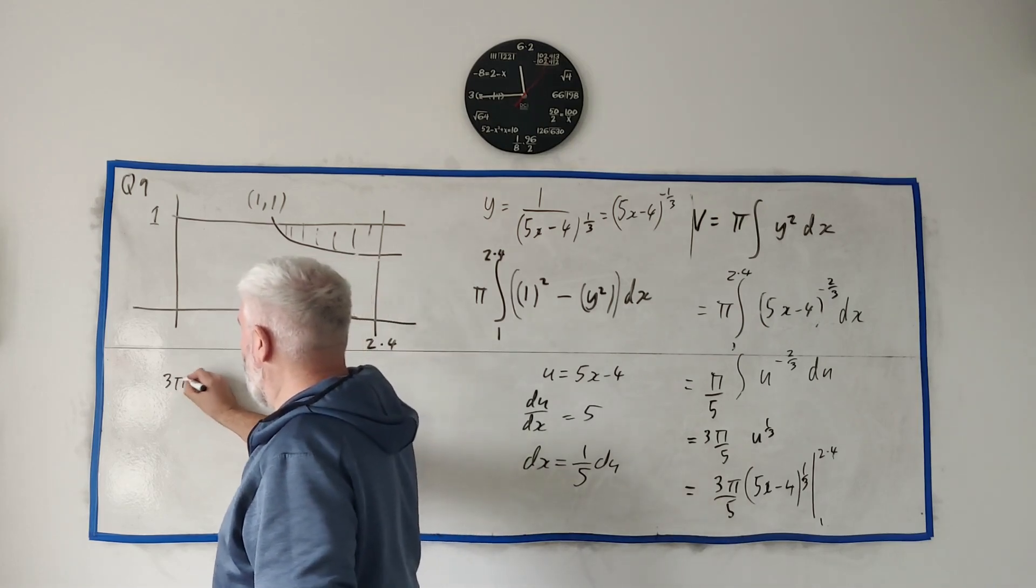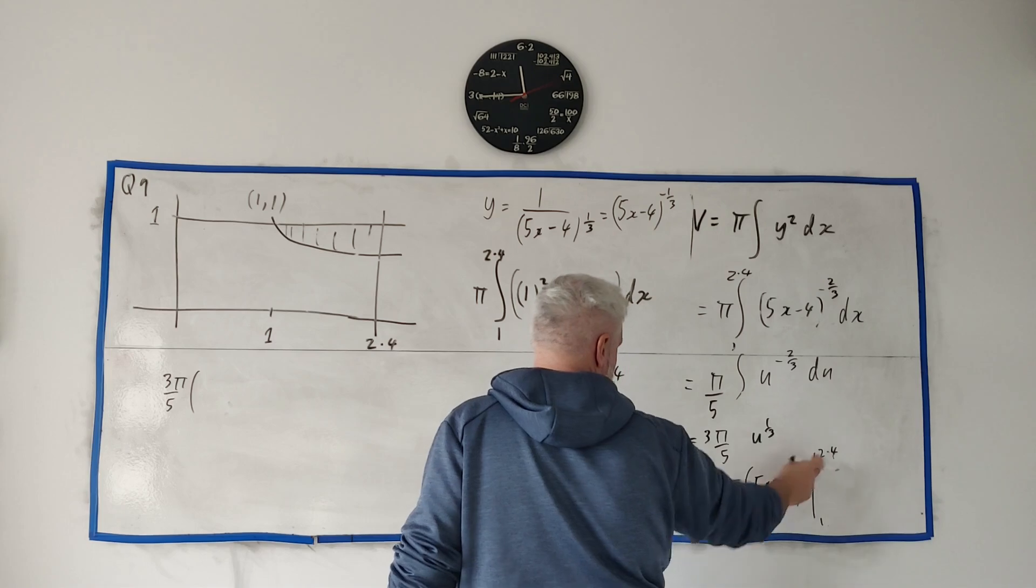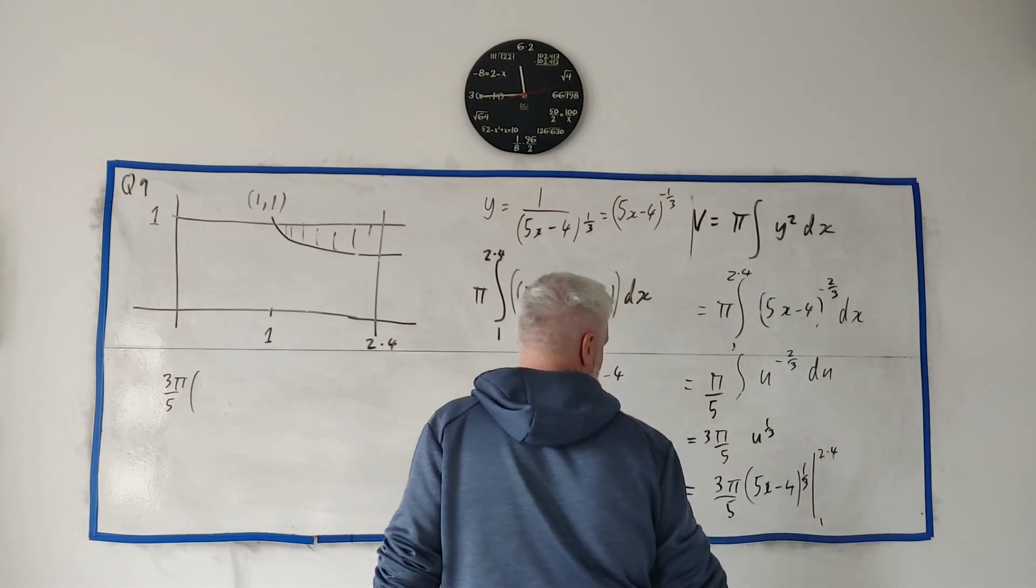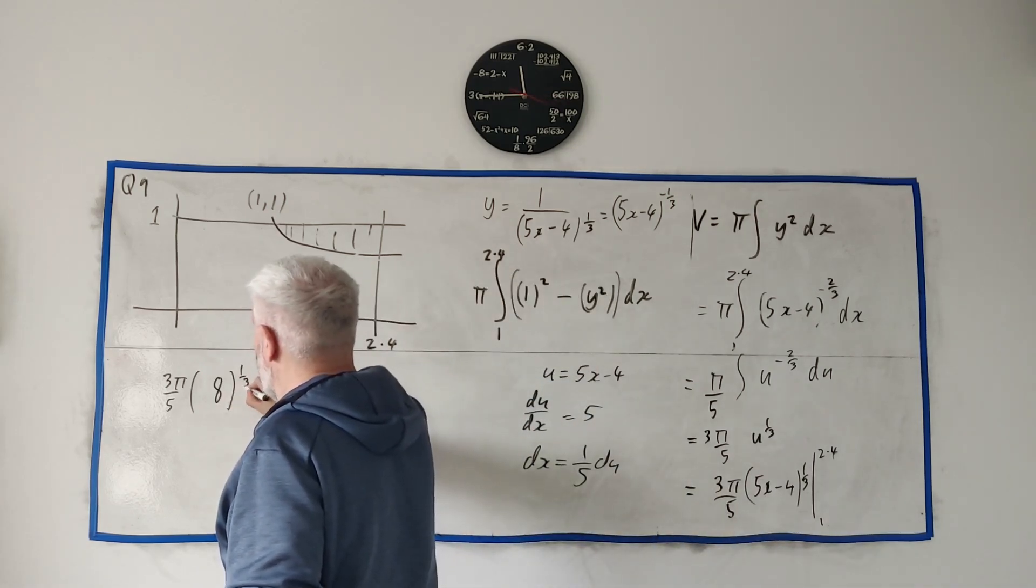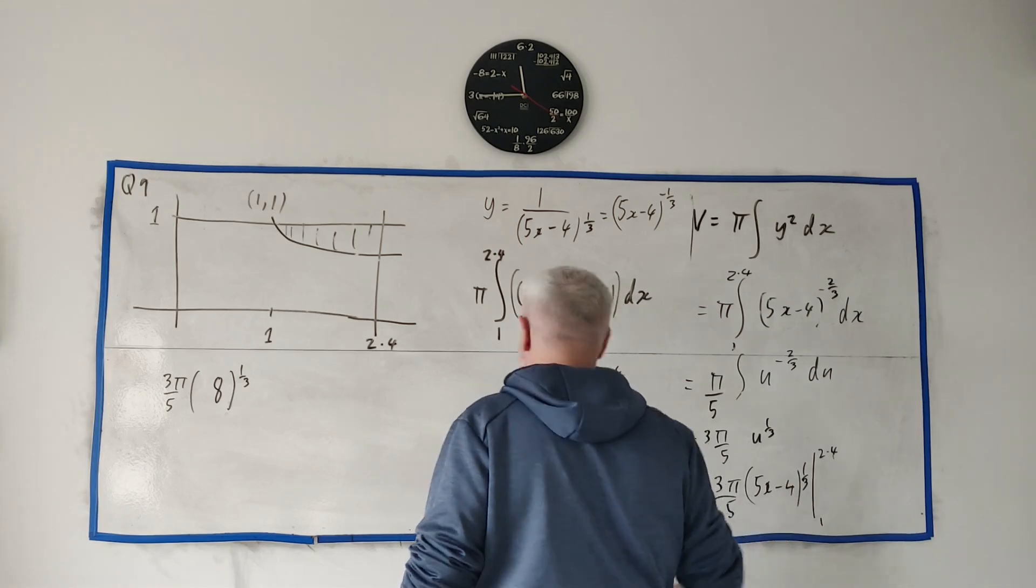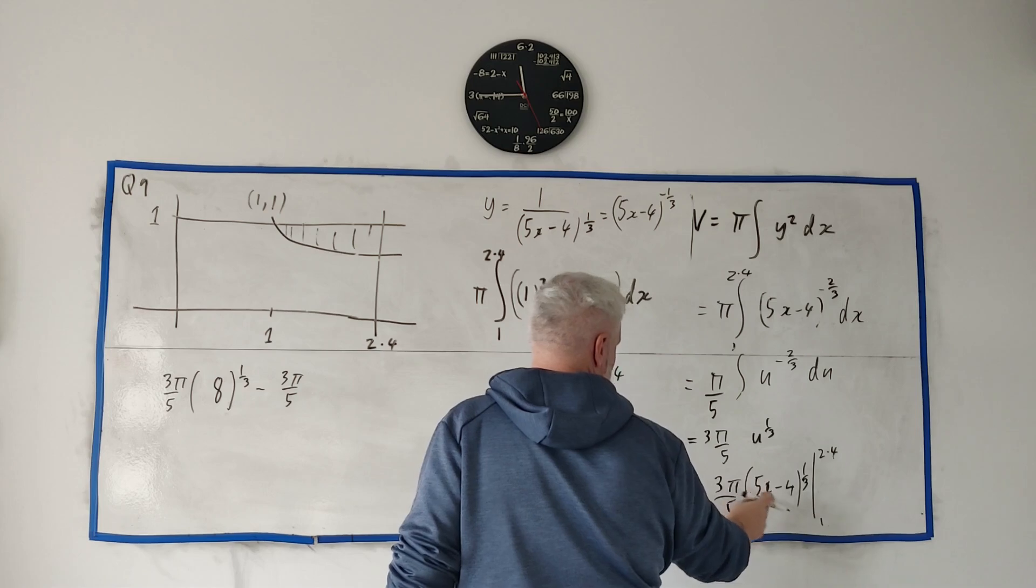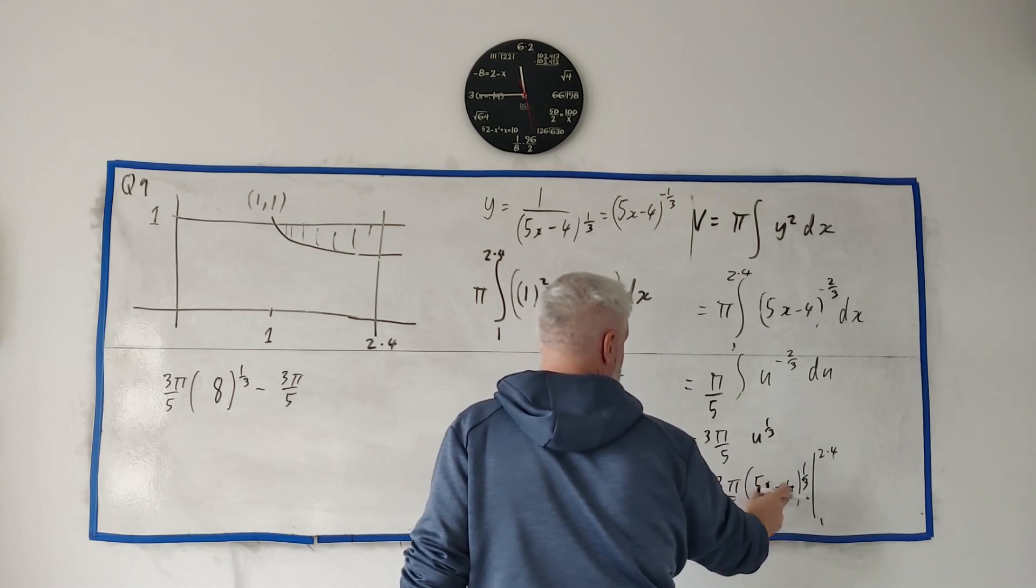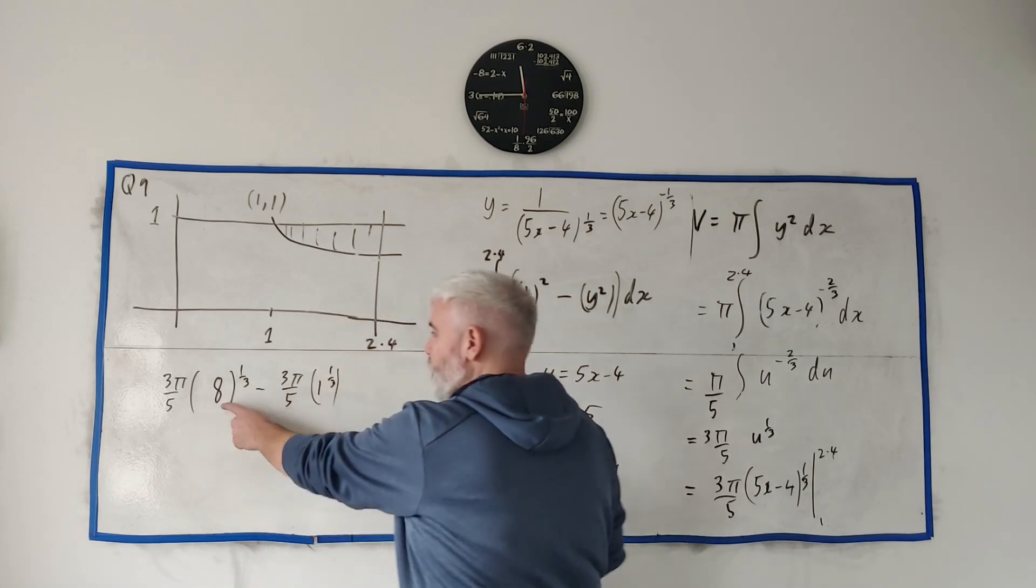We get 3 pi over 5 multiplied by - 5 times 2.4 minus 4 is 8 - so 8 to the power of 1/3, and then minus 3 pi over 5 - 5 times 1 is 5 minus 4 is 1 - so we get 1 to the power of 1/3.